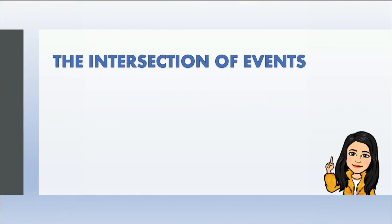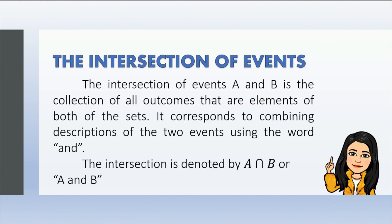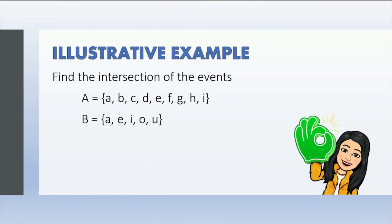Next term is the intersection of events. The intersection of events A and B is the collection of all outcomes that are elements of both of the sets. It corresponds to combining descriptions of the two events using the word 'and.' The intersection is denoted by A intersection B, or A and B. In short, the common elements of both events. Example: find the intersection of Event A, which consists of A, B, C, D, E, F, G, H, and I, and Event B, which consists of A, E, I, O, U. For our solution, we write their common terms. A intersection B consists of A, E, and I.